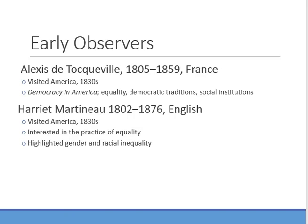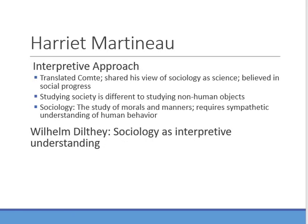Harriet Martineau likewise visited America in the 1830s — a generation or so after the American Revolution. She was interested in the practice of equality and highlighted gender and racial inequality in her observational notes. Hers was an interpretive approach. She initially translated the work of Auguste Comte and shared his views of sociology as a science, believed in social progress, and thought that studying society is different in form and nature from the study of non-human objects. For her, sociology was a study of morals and manners requiring a sympathetic point of view in understanding human behavior.